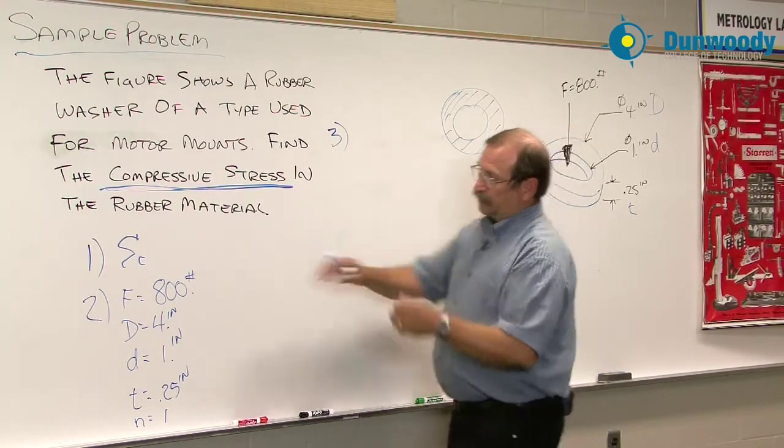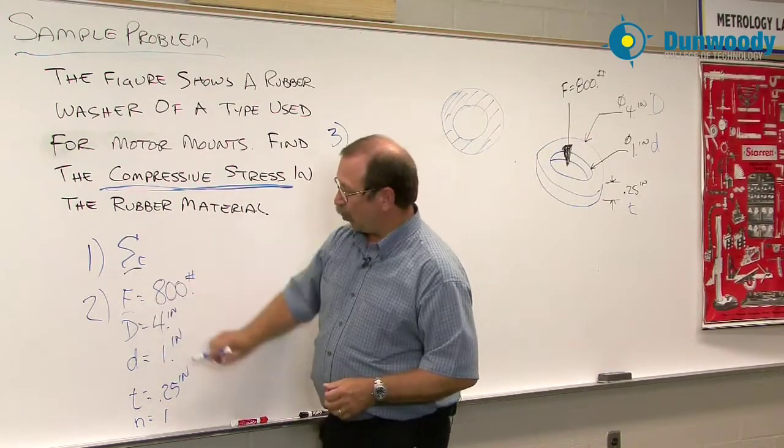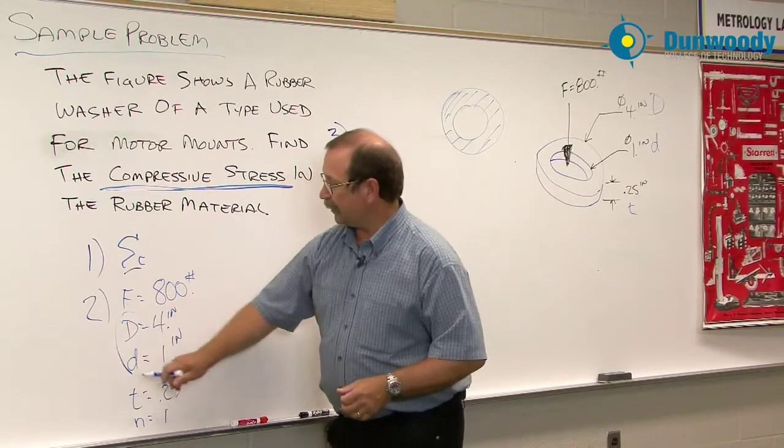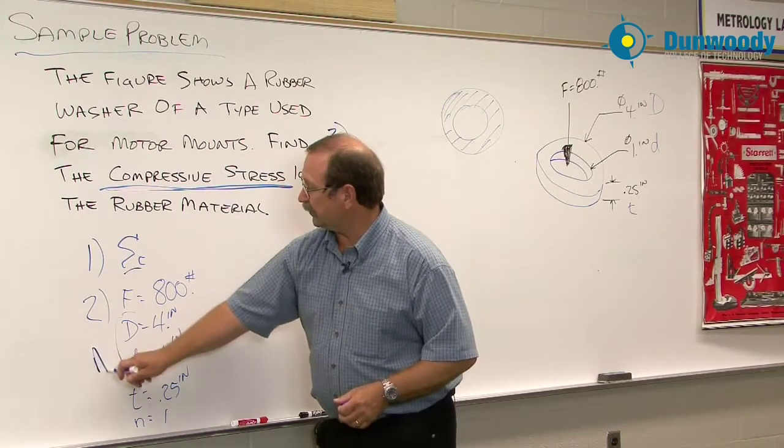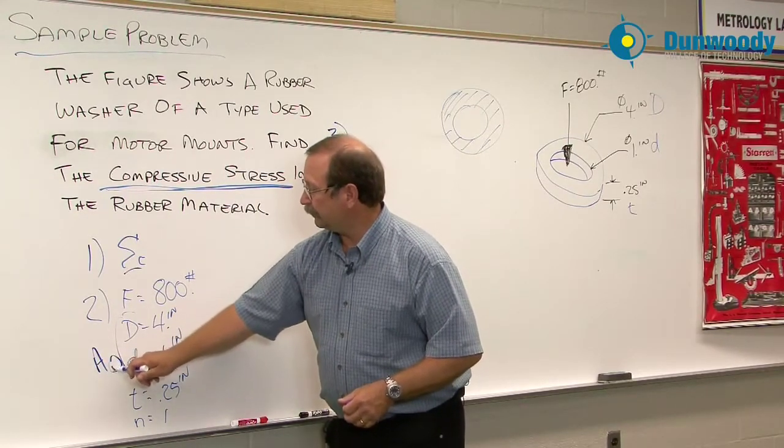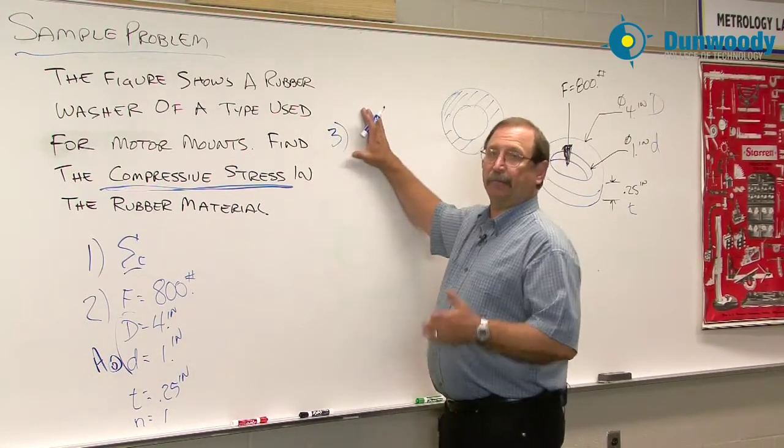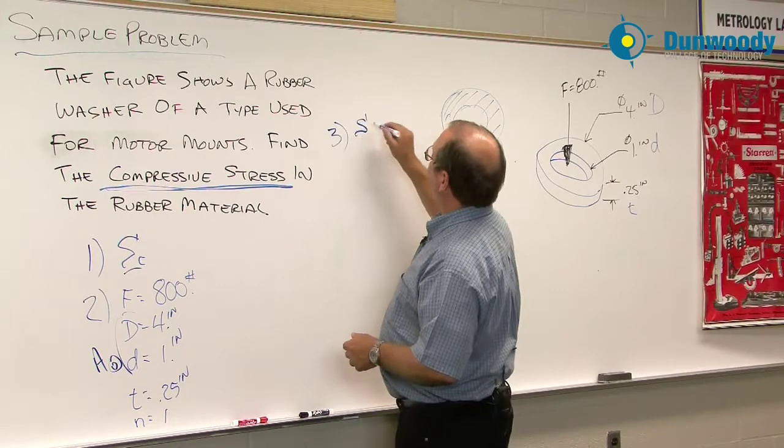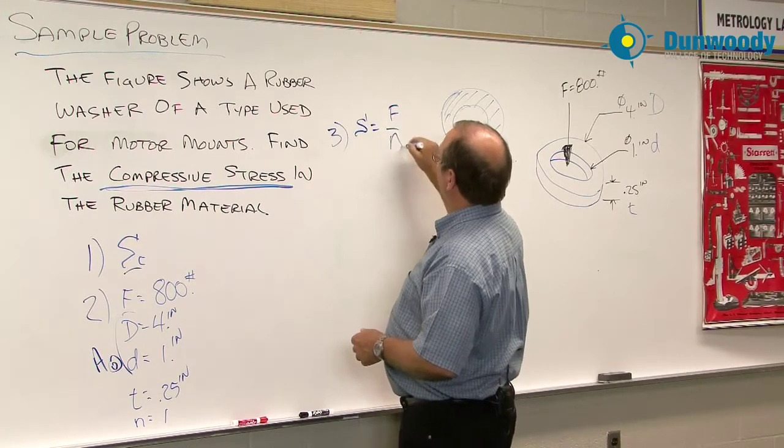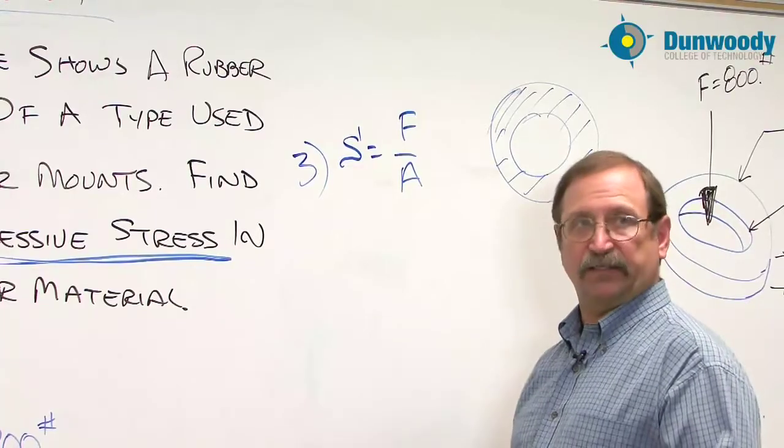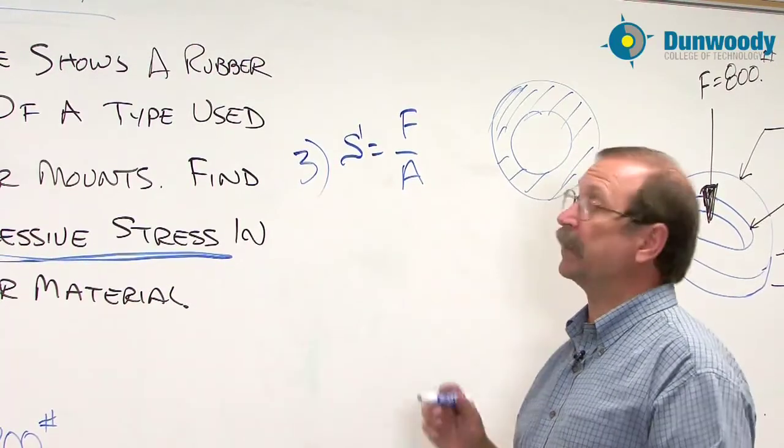As we take a look at the stress and the force, and then this information in here is going to give me the area of a hollow circle. I can start to give my basic formula, S is equal to F divided by A. And here I want to start adding information into this formula.